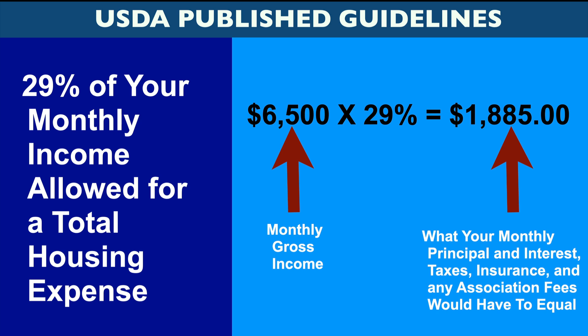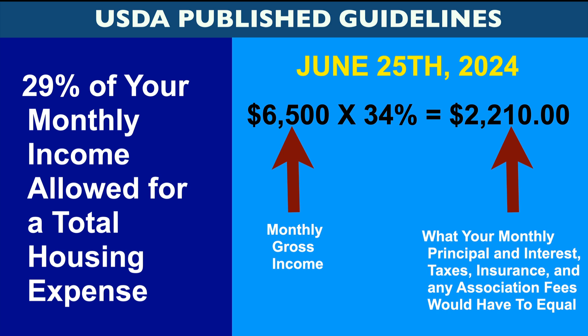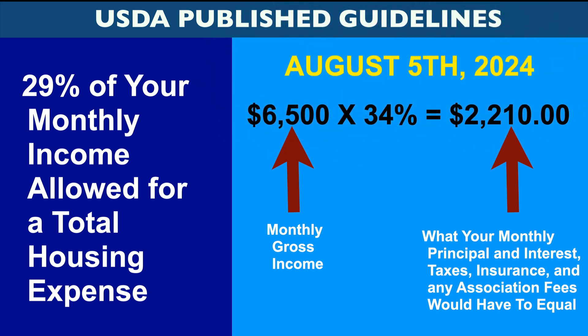However, USDA just announced that USDA debt-to-income ratios are increasing from 29% all the way up to 34% of your gross monthly income. This is big news for your USDA qualifying loan amount and overall eligibility for a wider variety of homes and sales prices. This increase is expected to be implemented on August 5th, 2024.